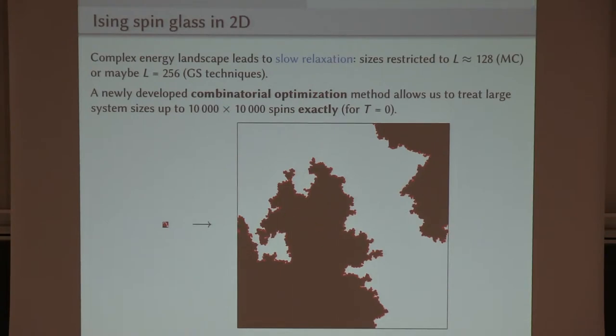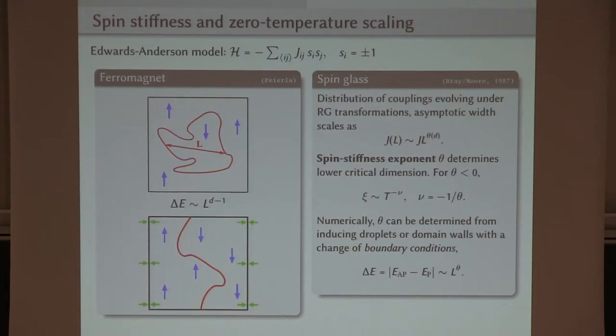So that allows us to really go to large system sizes up to 10,000 times 10,000. If you look at what you can do in Monte Carlo or in most ground state calculations that were considered previously, that's a reasonably big step. So the hope is that this gives us better control of the finite size correction.